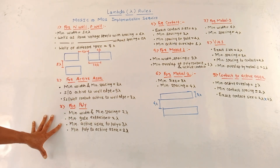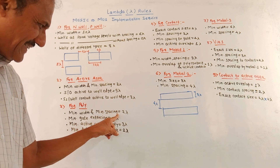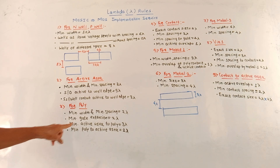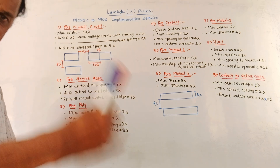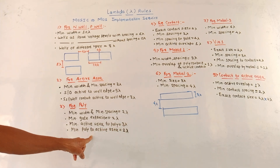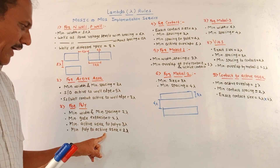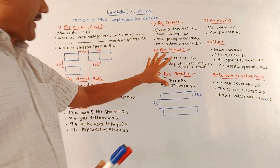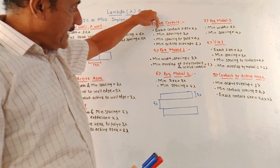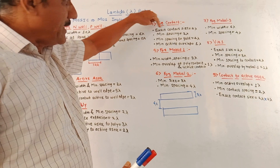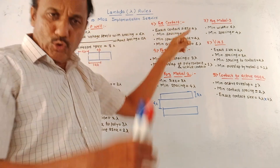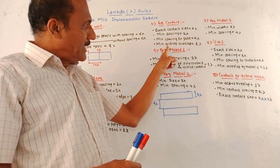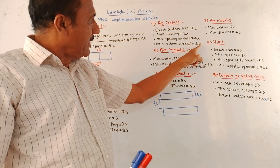The rules for the polysilicon layer are: minimum width as well as minimum spacing is 2 lambda. Minimum gate extension is 2 lambda. Minimum active area to polysilicon layer spacing is 3 lambda. For contacts, the exact contact size is 2 lambda. Minimum spacing is 2 lambda. Minimum spacing to the gate terminal of the MOSFET is 2 lambda. Minimum allowed active overlap is 1 lambda.